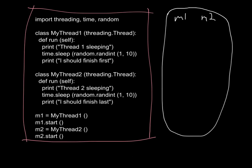Once created, M1 and M2 both start to execute at the same time. In most cases it will print out 'Thread 1 sleeping' and then 'Thread 2 sleeping' in that order, just because Thread 1 starts first. It's possible Thread 2 could print first, but in most cases we get a little bit of output in each case, and then both threads sleep for their random amounts of time.